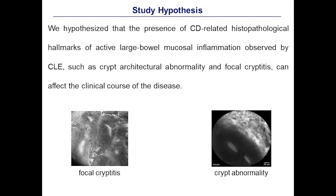In one study published in 2014, focal cryptitis and crypt architectural abnormality were found to be reliable markers of Crohn's disease inflammation at endomicroscopy. Consistently, patients presenting both these findings were coded as positive at endomicroscopy in the present study. On the left bottom of your screen, you can see an example of severe focal cryptitis revealed by endomicroscopy, while on the right bottom the presence of crypt architectural abnormality according to crypt density, tortuosity and lumen shape in a patient with Crohn's colitis.